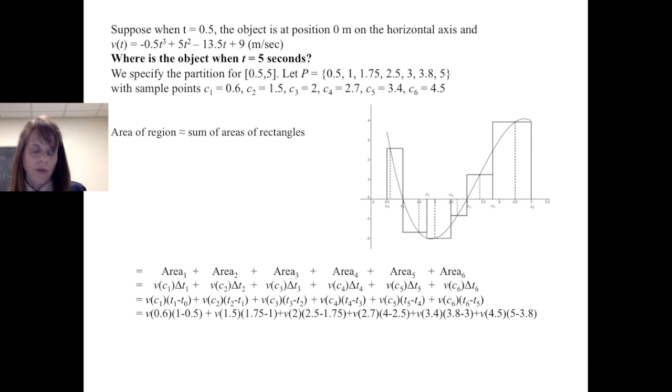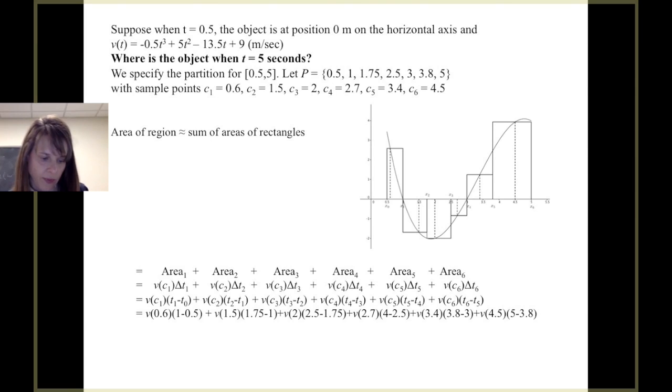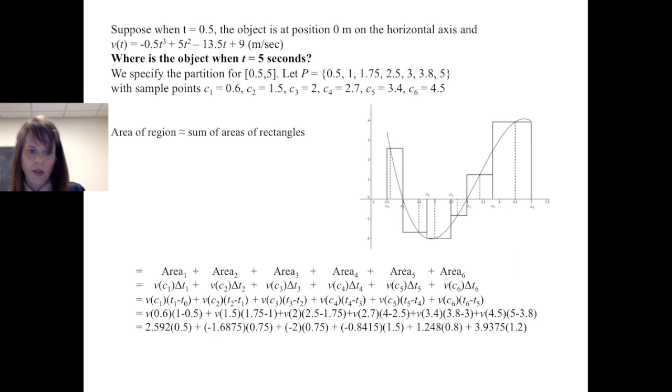I am actually plugging in the values there, so I'm using my sample points. So 0.6, 1.5, 2, 2.7, 3.4, 4.5. Those correspond to where we're determining the height of our velocity function. We've plugged in our values for the widths of our subintervals. We calculate that and we get 2.991525 meters.